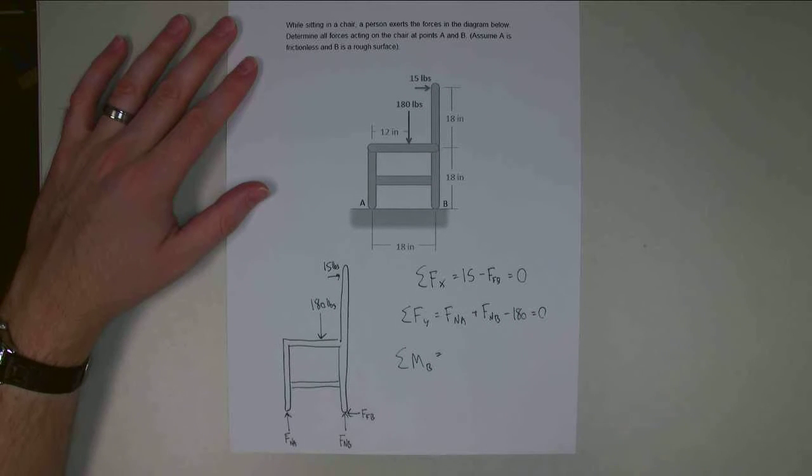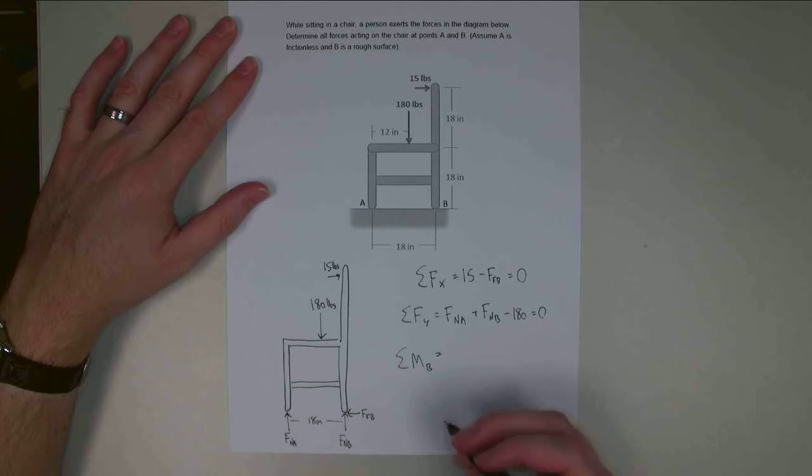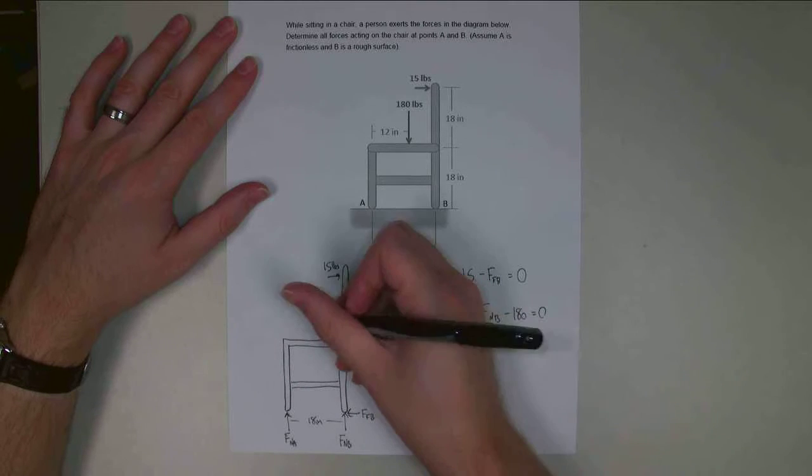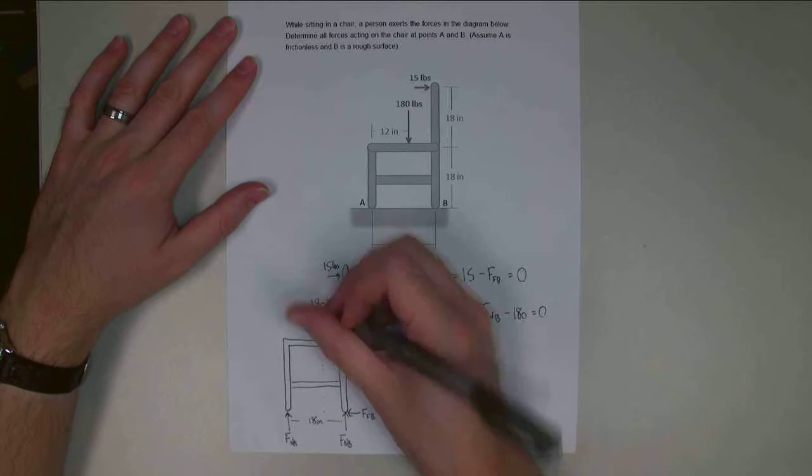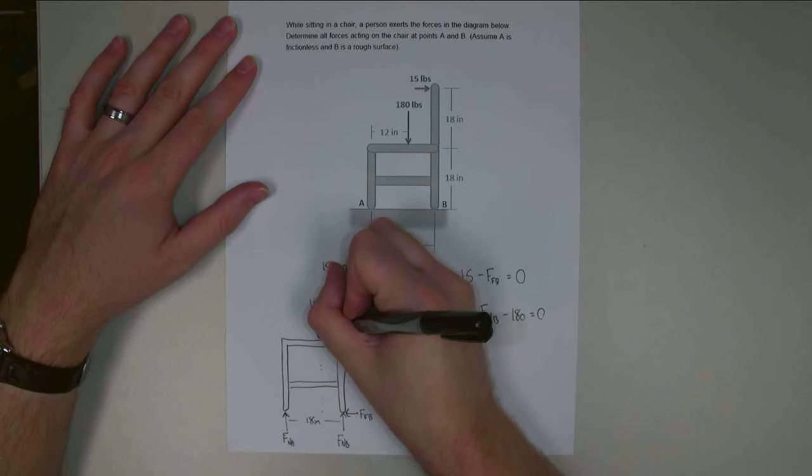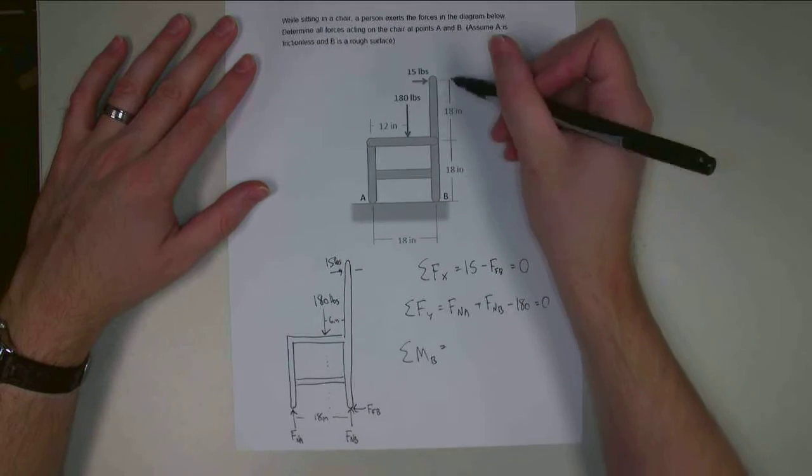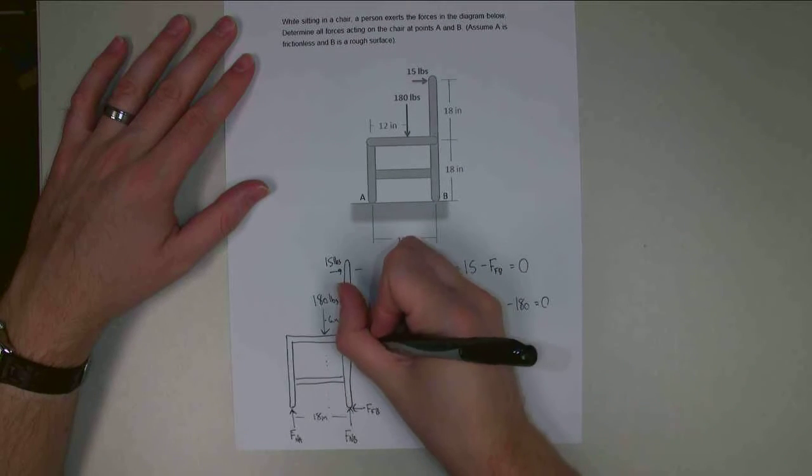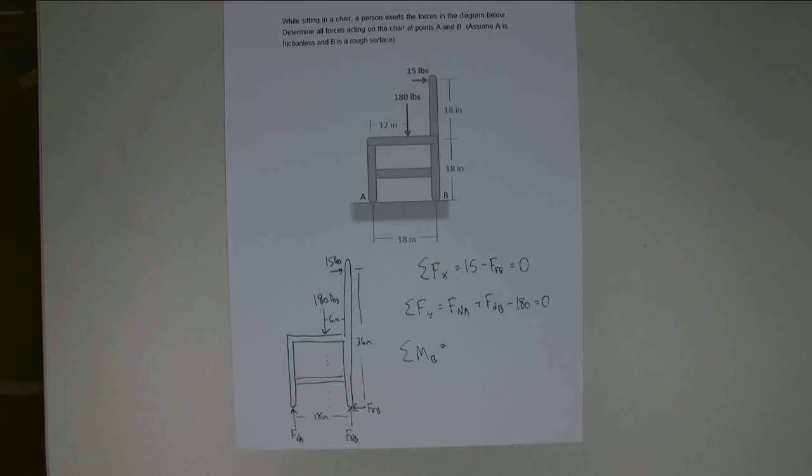Alright, so now I need to determine the perpendicular distance of everything from point B, which is going to be 18 inches this way from A to B. This 180-pound force, if I go perpendicular distance here, if it's 12 inches back from the front, and it's a total of 18 inches, that means it's 6 inches from the back of the chair. And the last one is the height of this force here. So 18 plus 18, the total height is 36 inches. And those are my distances, my perpendicular distances from all of those forces to point B.